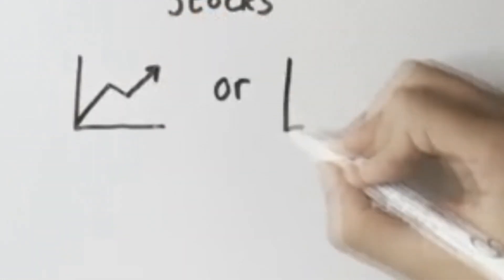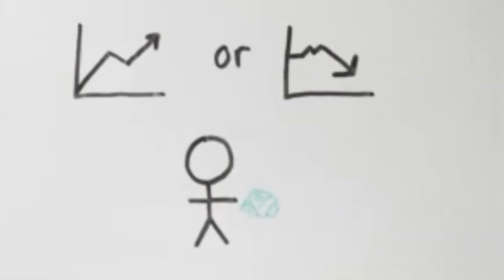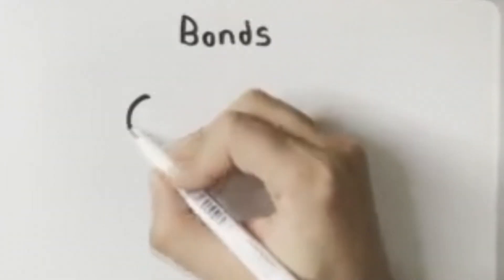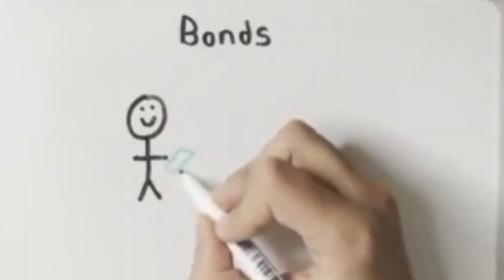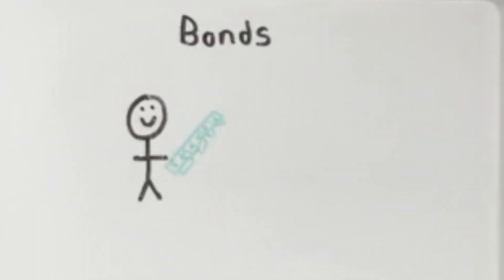People generally believe that stocks are quite risky. The price of a company could go up or down and we could lose all our money. Bonds on the other hand, especially government bonds, are seen as being very safe because we get a guaranteed risk-free return every single year.